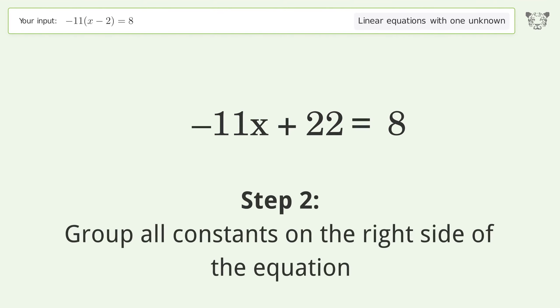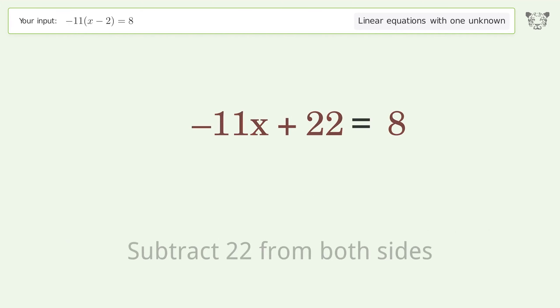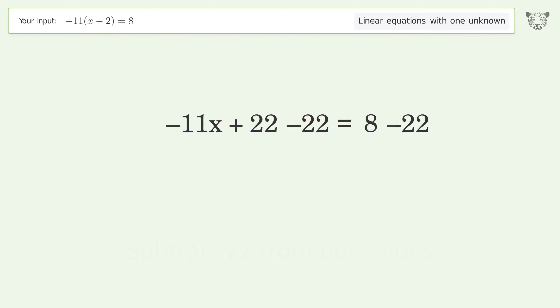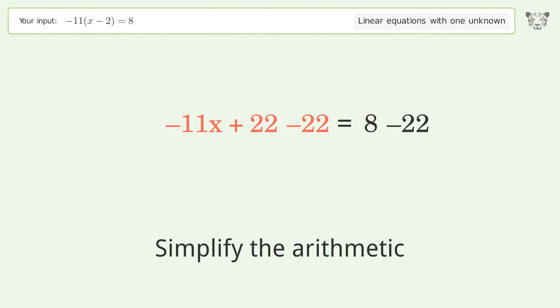Group all constants on the right side of the equation. Subtract 22 from both sides, then simplify the arithmetic.